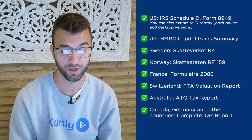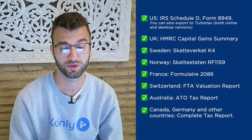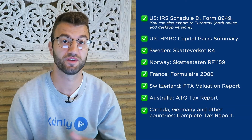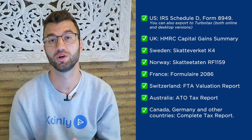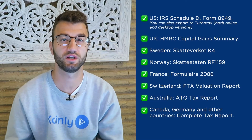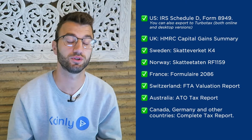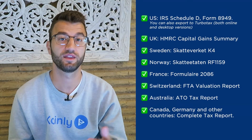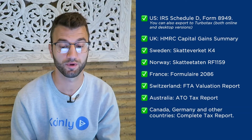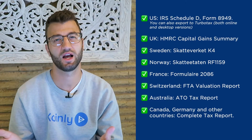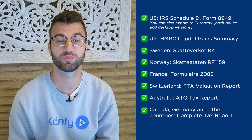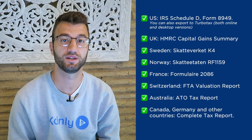We have reports for the UK, Sweden, Norway, France, Switzerland, Australia, Canada, Germany, and other countries. We also have the complete tax report, which is a document you can print off and give directly to an accountant to combine with your other tax documentation. Alternatively, you can invite them to Coinly to set up their own account seat firm here with us. Lastly, check your country's rules and regulations because this tax report might be deductible.